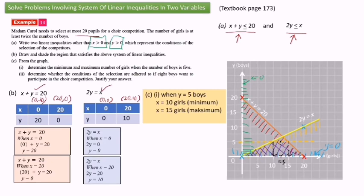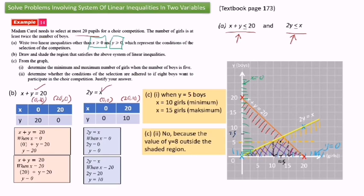Part C2: determine whether the conditions of the selection are adhered to if 8 boys want to participate in the choir competition. Justify your answer. Based on the diagram, the value of y equals 8 is outside the shaded region. So the answer is no, because y equals 8 lies outside the shaded region, meaning the conditions are not satisfied.